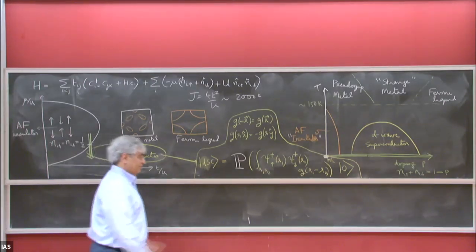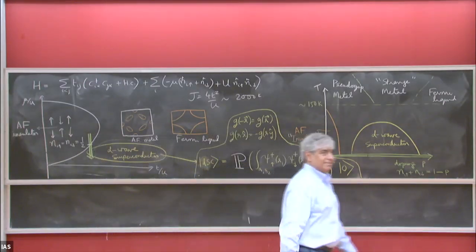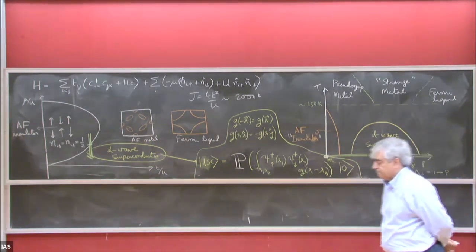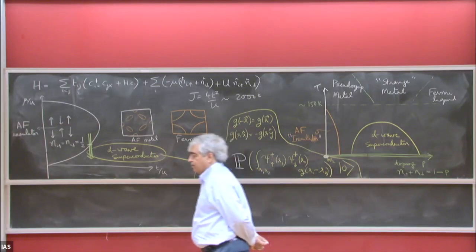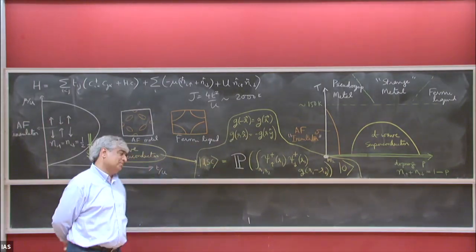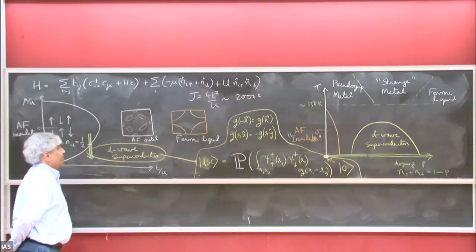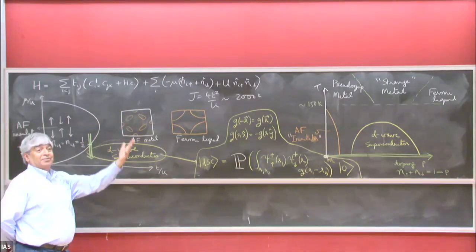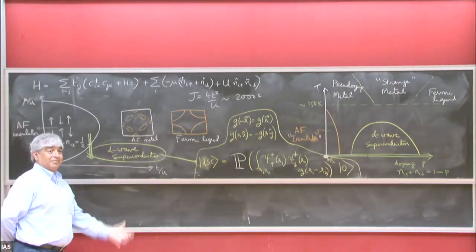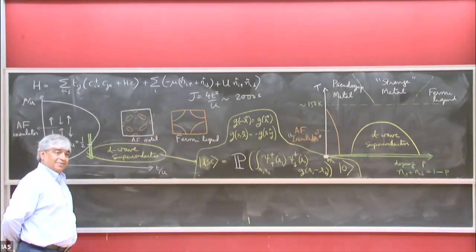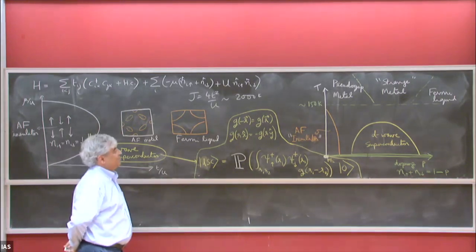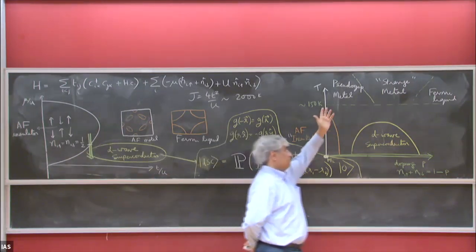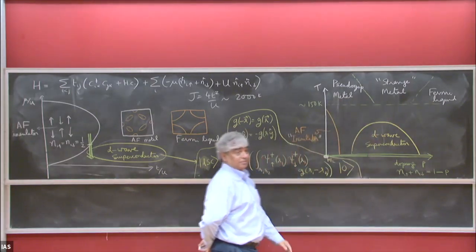This picture with the pseudogap, strange metal, and Fermi liquid comes essentially from experiment. There's also a lot of numerical work on the Hubbard model — very hard to do precisely because of the sign problem — but with heroic efforts using big computers and special algorithms, you do see the three phases in numerical work too.